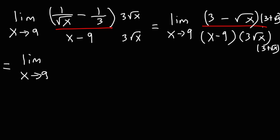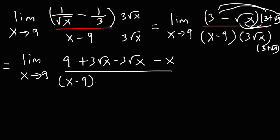So now let's FOIL. We're going to have 3 times 3 which is 9 and then 3 times the square root of x. That's going to cancel with negative 3 square root x but I'm going to write it out. And then negative square root x times square root x. That's just going to be negative x. On the bottom we have x minus 9 times 3 square root x and then 3 plus square root x. So these two will cancel and so we're just going to be left with 9 minus x on the numerator.